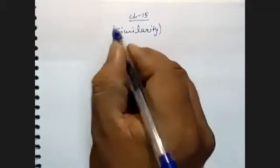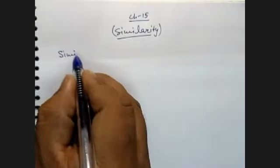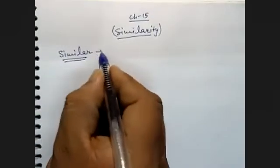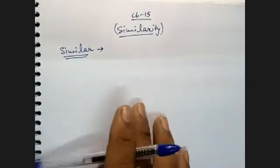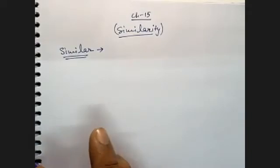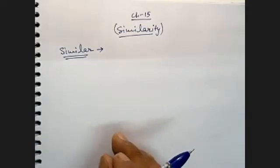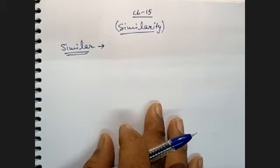The topic is similarity. What do you mean by similar? A student answers: same. The teacher asks: what is same? And then asks about congruent — is that also same? A student responds: in congruency we know the same shape and size, but in similarity we also know the same.